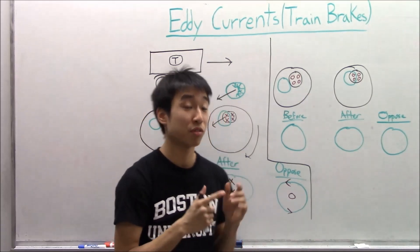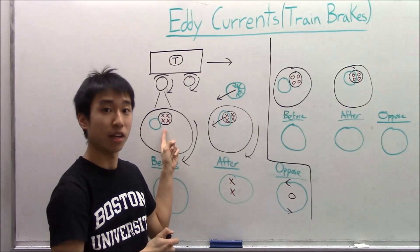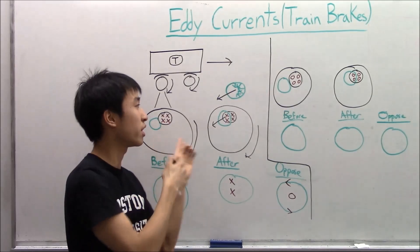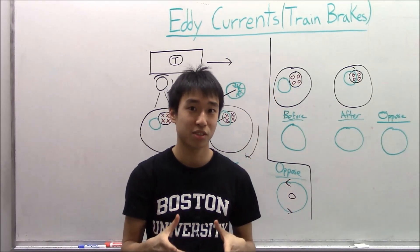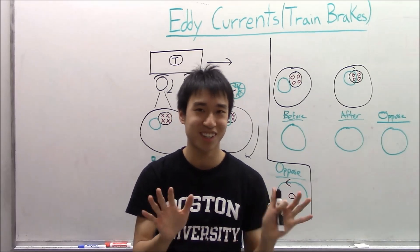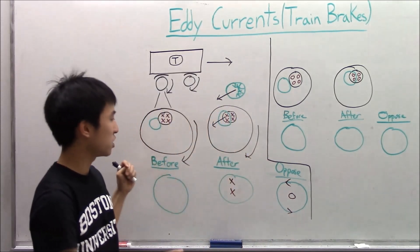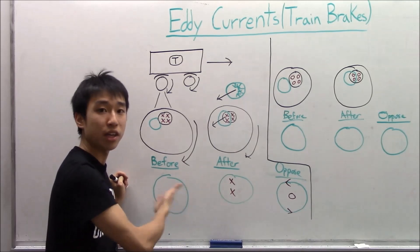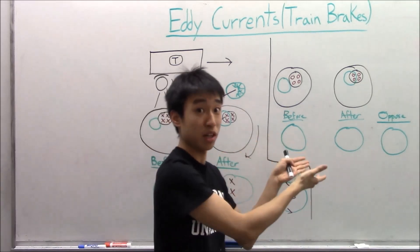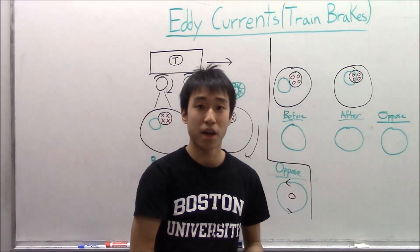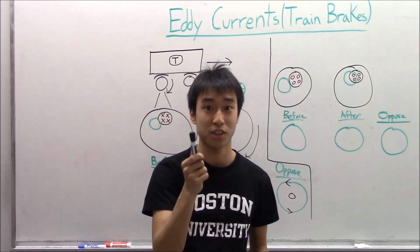So now, what if we reverse the magnetic field — instead of the field lines going into the board, they come out of the board? Some of you might remember the answer from lecture, but try not to think about that. Take a guess, do the same analysis we just did for this situation, and come back in a couple seconds. Hit pause if you need to.